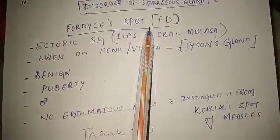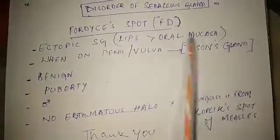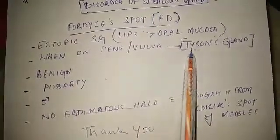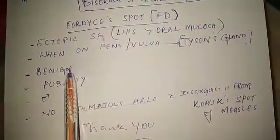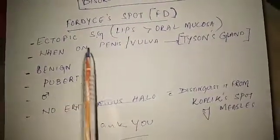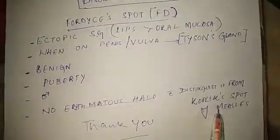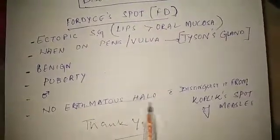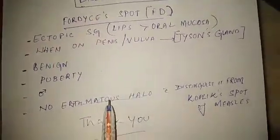Fordyce spots represent the presence of ectopic sebaceous glands in the region of the lips or in and around the oral mucosa. When such sebaceous glands are seen in and around the penis or the vulva, those glands are called Tyson's glands. It is usually a benign condition, seen around puberty, and mostly affects males. These lesions can be confused with Koplik spots of measles, but in Koplik spots we see an erythematous halo, whereas in Fordyce spots we do not see any erythematous halo around them.